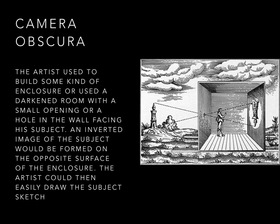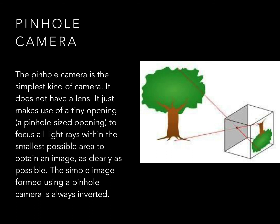The pinhole camera is the simplest kind of camera. It does not have a lens. It just makes use of a tiny pinhole-sized opening to focus all light rays within the smallest possible area to obtain an image as clearly as possible. The simple image formed using a pinhole camera is always inverted. As you can see in this photo, there is a darkened room with a small opening, light enters through it, and the subject is automatically projected inverted on the opposite wall.